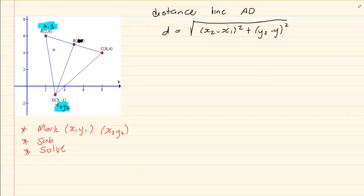Now once we marked our x1 y1 x2 y2 we are going to substitute into the formula. So we have 3 minus 2 plus and then we have minus 1 minus 6. You can then use your calculator and you would have the distance is equal to the root of 50.